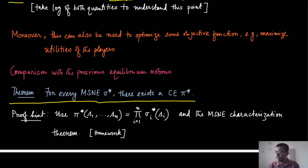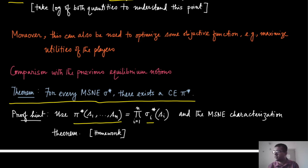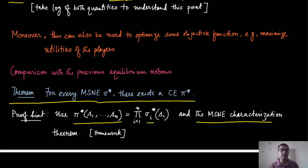If you just multiply the individual probabilities — the individual mixed strategies for every player — what you get is a candidate correlated equilibrium. Here, sigma star is a mixed strategy Nash equilibrium for player i. When defining pi star for a particular strategy profile, you take the product of all individual mixed strategy probability masses. You also need to use the two conditions from MSNE characterization: all utilities are equal on the support, and expected utility on the support is at least as large as outside. I am leaving this as a homework.